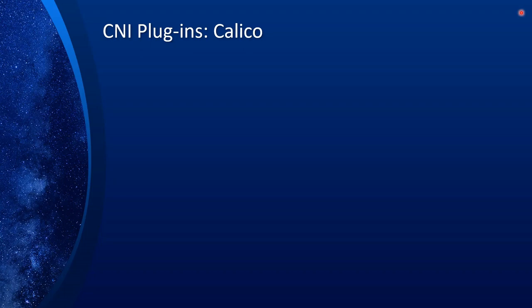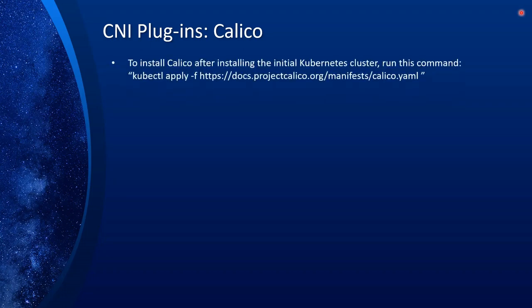Now that we have some understanding of how CNI plugins work, let's talk about Calico, which is a very popular CNI plugin provider. In the previous episode we discussed Flannel. To install Calico, once you set up your initial Kubernetes cluster, you can run the command kubectl apply -f followed by the URL to the installation package. If you haven't done any Kubernetes deployments, I have a full course on installing Kubernetes on CentOS with detailed information including scripts.